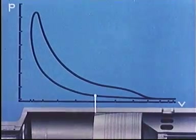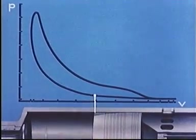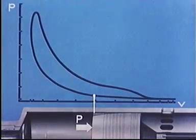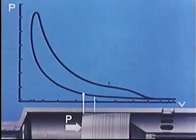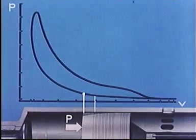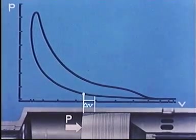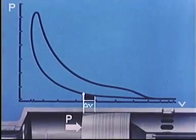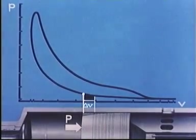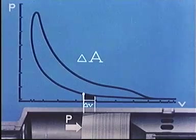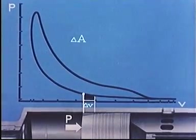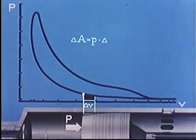At an arbitrary position of the piston during the compression stroke, there is a certain pressure P acting on the piston top. If the piston travels a short distance further corresponding to delta V, and if we ignore the minimal change in pressure, the amount of work done, delta A, will be given by the pressure multiplied by the change in volume, or P times delta V.